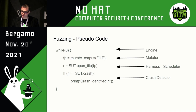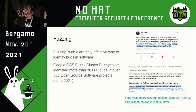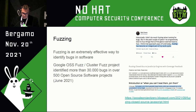Is this effective, or too primitive? It's extremely effective. Several security researchers say they integrate fuzzing into their vulnerability research lifecycle. Google Project Zero uses fuzzing to find bugs. To prove it's not just opinion: Google OSS-Fuzz has identified more than 30,000 bugs in 500 open source projects.